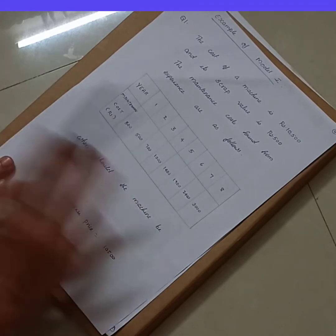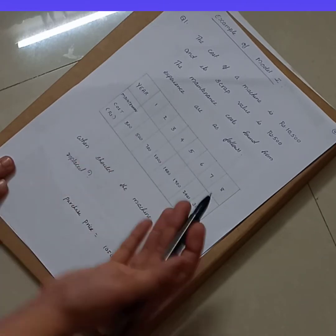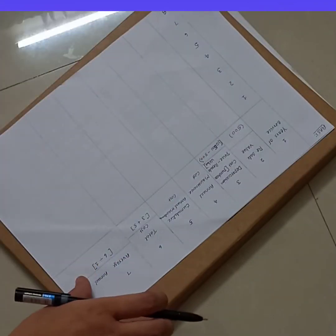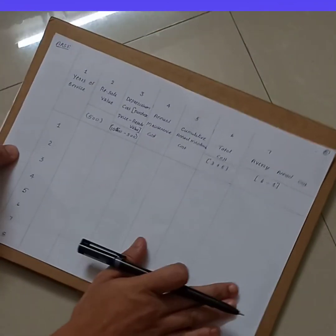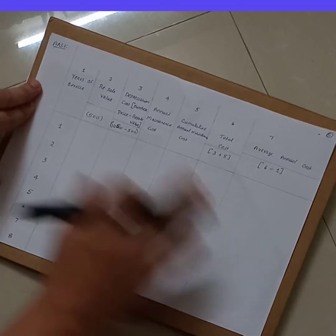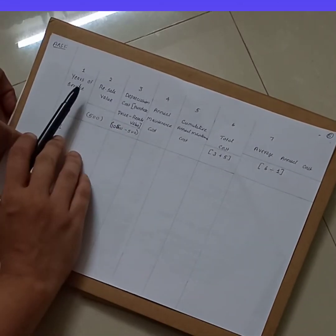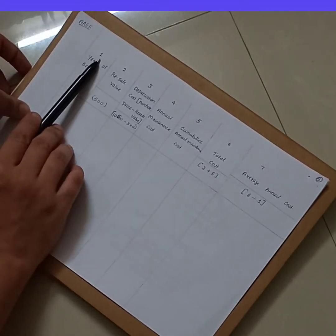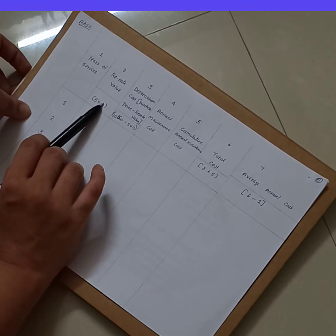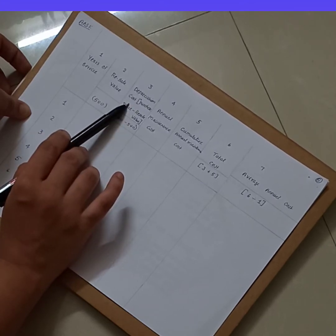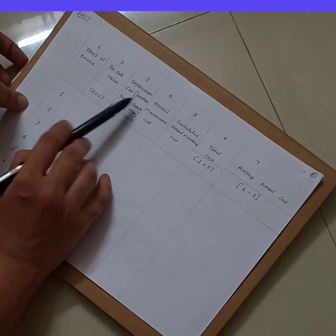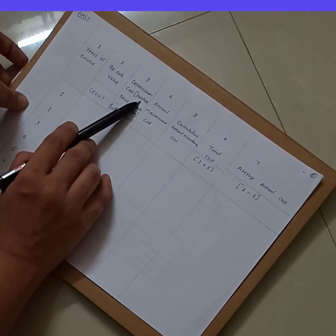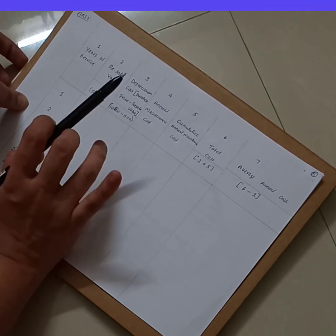At one point we need to replace this item — so what is the optimum time period? To solve this, we draw a table with seven columns. The first column is year of service, the second is resale value, and the third is depreciation cost, which is purchase price minus resale value. The purchase price is 10,500 and resale value is 500, so the depreciation cost is 10,000 for all years.